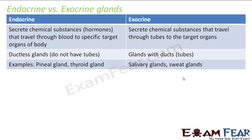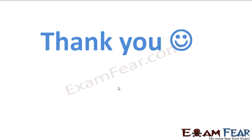Let's compare endocrine and exocrine glands. Endocrine glands secrete hormones that travel through the blood to specific target organs. Exocrine glands secrete chemical substances that travel through tubes to target organs, generally apical surfaces. Endocrine glands are called ductless glands; exocrine glands are glands with ducts. Examples of endocrine glands include the pineal and thyroid glands; examples of exocrine glands include salivary glands and sweat glands.